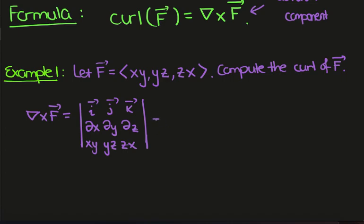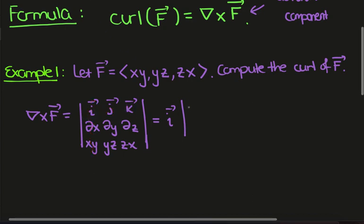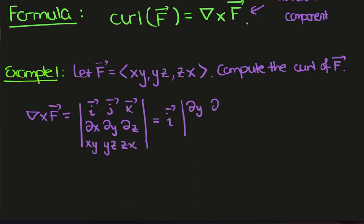We're going to compute the determinant of this matrix. We'll have i-hat times the determinant of the matrix given by hiding the row and the column that the i-hat entry is in. So we'll have partial-y and partial-z for yz and zx.